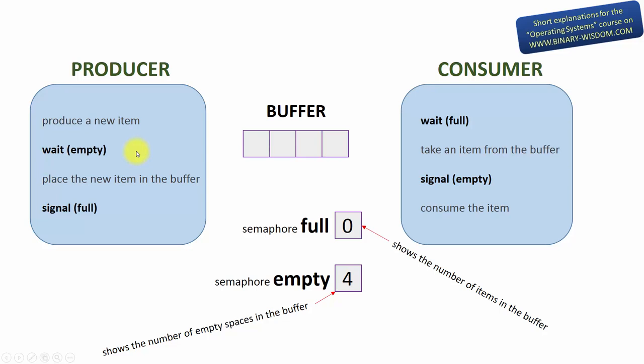On the other hand, if the producer waits for the semaphore empty and empty equals zero, that means there is no place in the buffer for the new item. As you will remember, if a process or thread waits for a semaphore that is zero or less, they are placed in an inactive waiting state. If empty equals zero, the producer will just enter a waiting state and resume only when the consumer signals empty, showing that an empty space has appeared in the buffer.